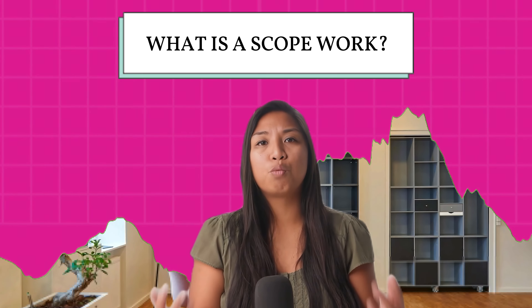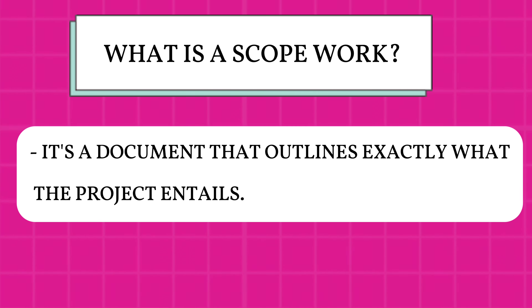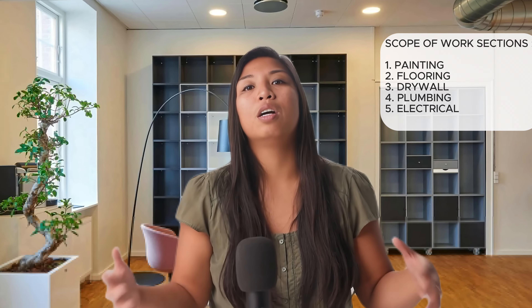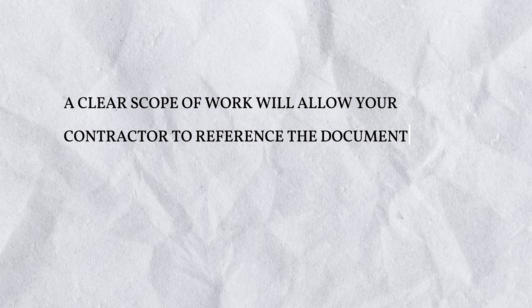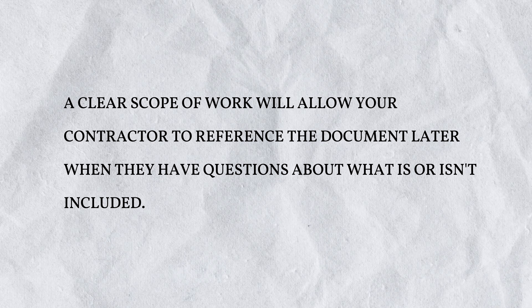What exactly is a scope of work? A scope of work is a document that outlines exactly what the project entails. Typically, this scope of work is broken into sections divided by each trade — which is painting, flooring, drywall, plumbing, electrical, etc. This document is essential when it comes to clear communication with your contractor. A clear scope of work will allow your contractor to reference the document later when they have questions about what is or isn't included.